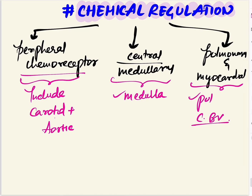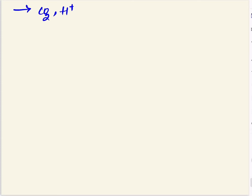Pulmonary and myocardial chemoreceptors are present in the pulmonary and coronary blood vessels. Now, regarding the central chemoreceptors present in the medulla oblongata: whatever changes happen in the body, carbon dioxide and hydrogen ions are released. These do not directly alter the respiratory centers — namely the VRG and DRG — which perform inspiration and expiration.